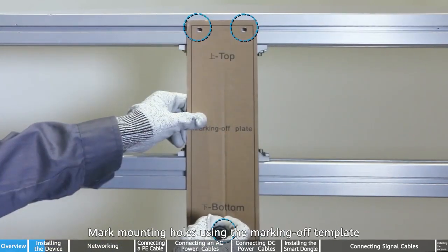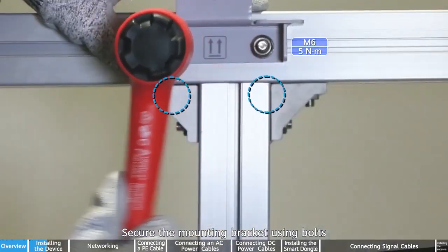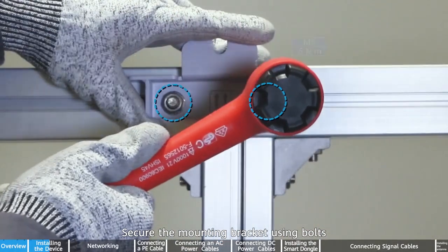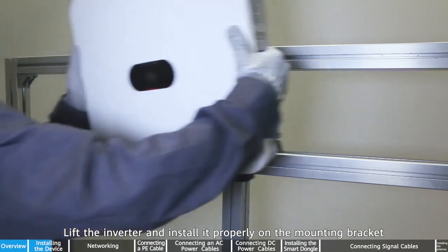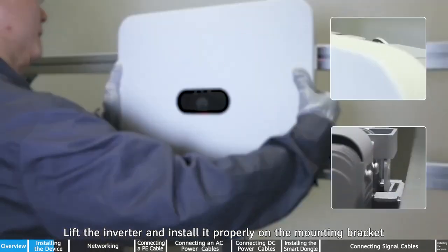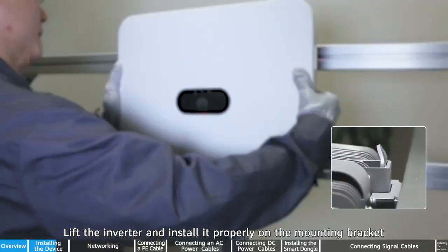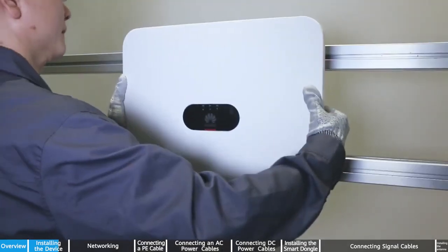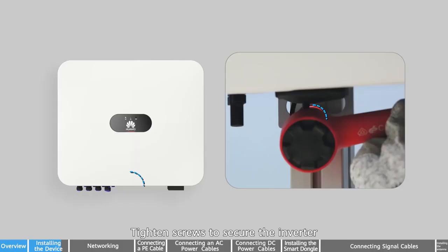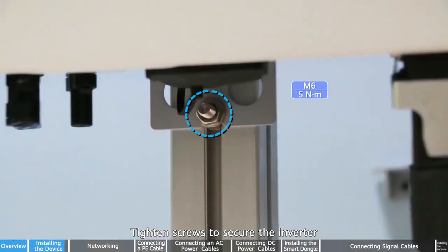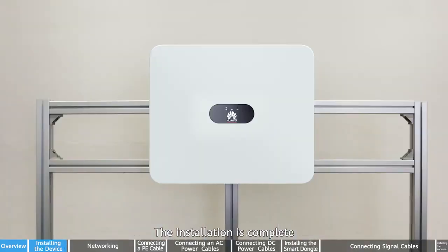Mark mounting holes using the marking off template. Secure the mounting bracket using bolts. Lift the inverter and install it properly on the mounting bracket. Tighten screws to secure the inverter. The installation is complete.